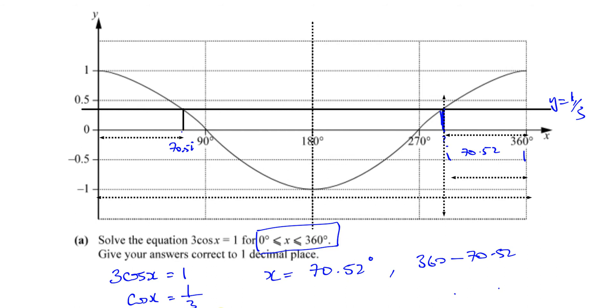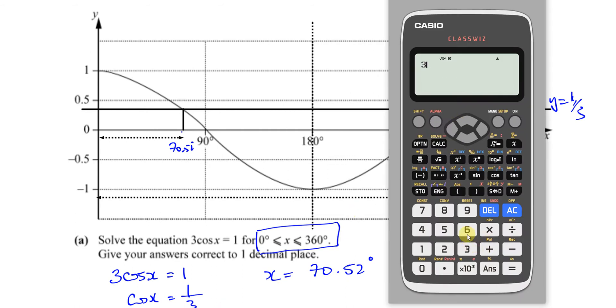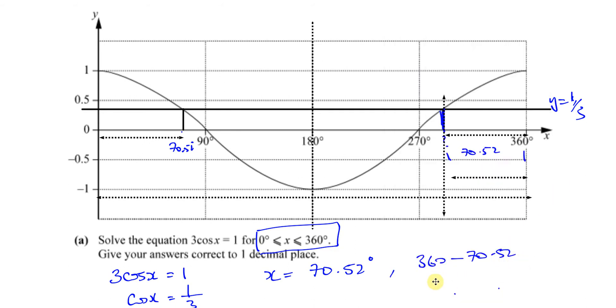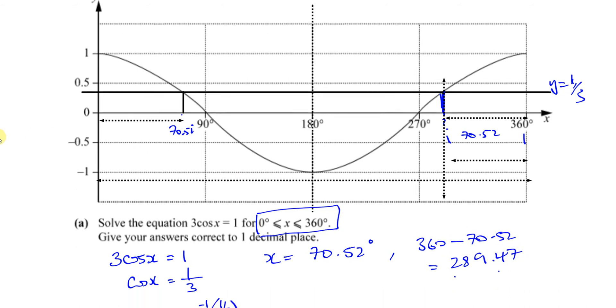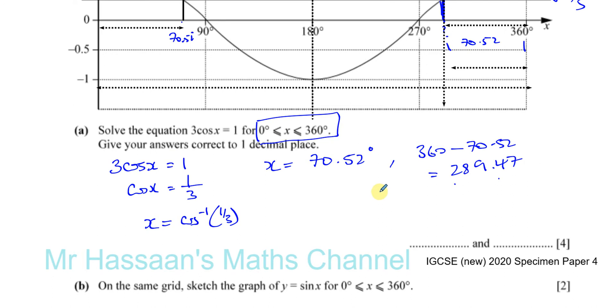We take our answer in the calculator, we do 360 take away the answer, and we get 289.47. So those are the two angles within our range. We've got 70.5 to one decimal place and 289.5 to one decimal place. And there we have answered this question.